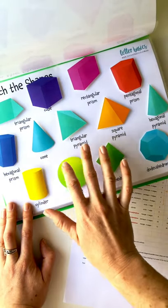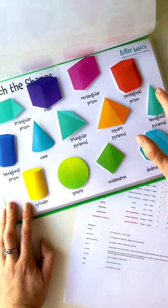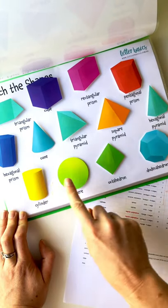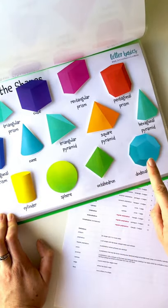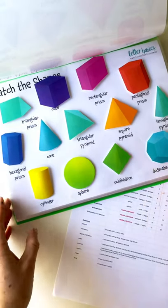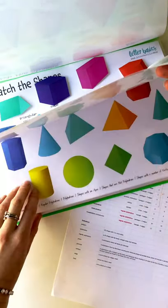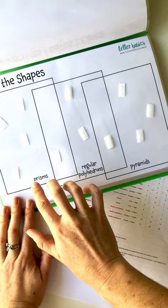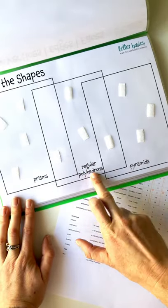There's cone, triangular pyramid, square pyramid, hexagonal pyramid, so we've got our pyramids. Then we've got cylinder, sphere, octahedron, and dodecahedron. Now I started this video before and it just got messy, so I'm going to skip this activity for now and this one, and we'll go straight to this one so we can first understand what the prisms, polyhedrons, and pyramids are.